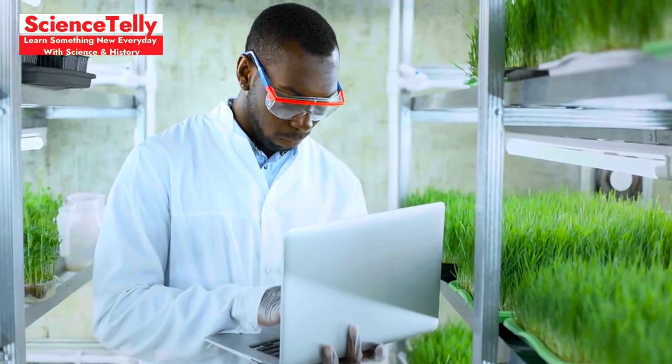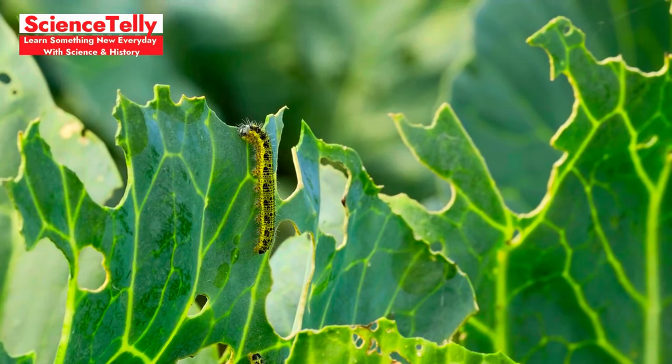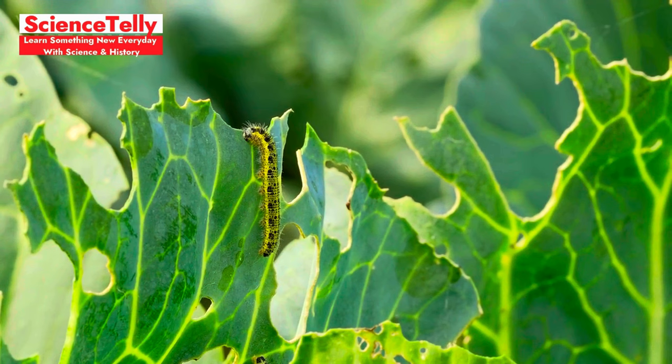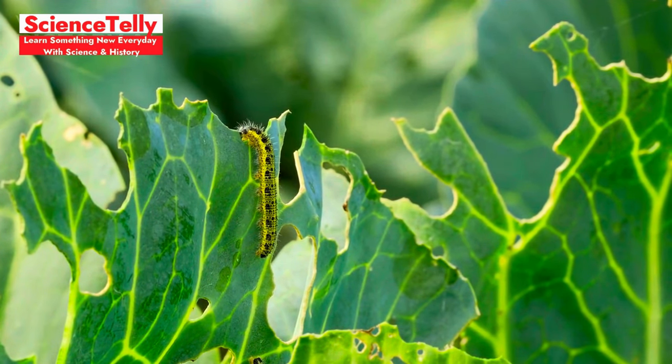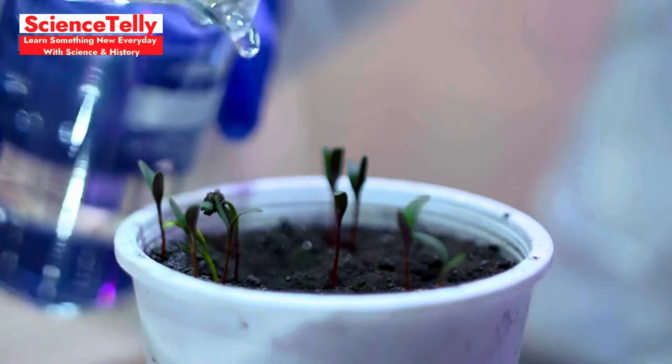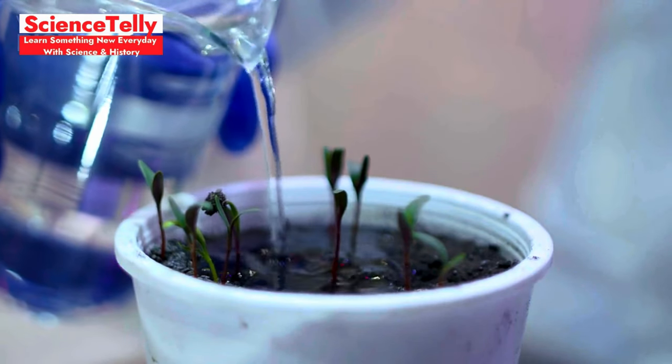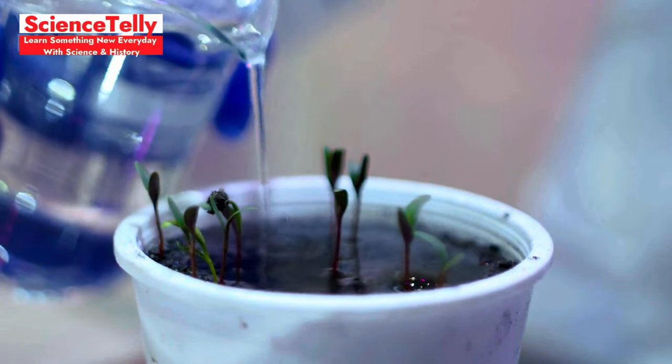However, scientists have discovered that plants do react when they're damaged. For instance, when a plant like a tomato or tobacco plant is injured, say, if it's bitten by an insect or a leaf is cut, it releases certain chemicals. These chemicals can act like stress signals,